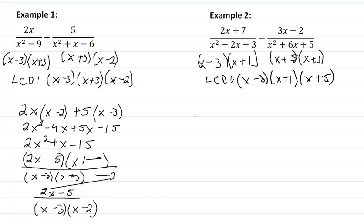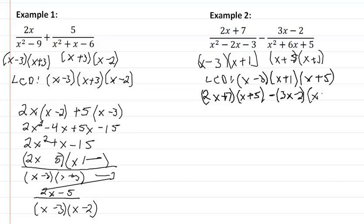So we write down our first numerator, which is 2x plus 7 — we're going to use parentheses. We're going to multiply by the missing factor here for this one, which is going to be the x plus 5. Write down the sign in the middle, and we need to have parentheses here because it is a binomial. Write down the numerator, and then write down the missing factor, which looks like it's going to be x minus 3. We're going to FOIL this out — I'm going to do this real quickly, basically in one step.